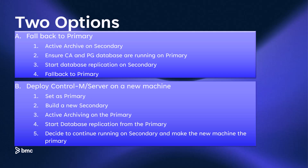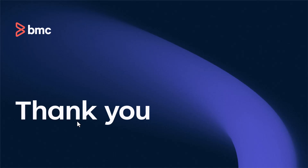Step three, activate archiving on the primary. Step four, start the database replication on the primary. At this point, you will have a fully functional, highly available CTRL-M environment and you can decide how to proceed forward. This concludes our video on setting up a highly available CTRL-M server with PG replication. Thank you for watching this video. Your feedback is greatly appreciated.